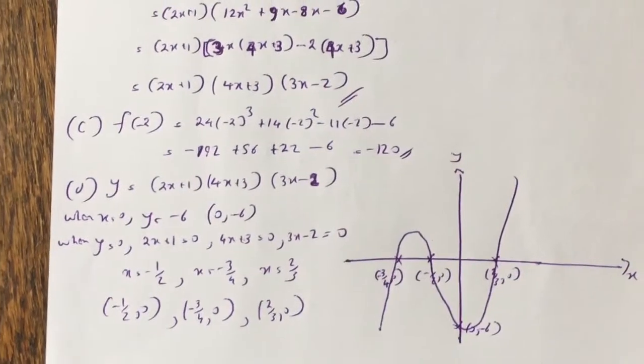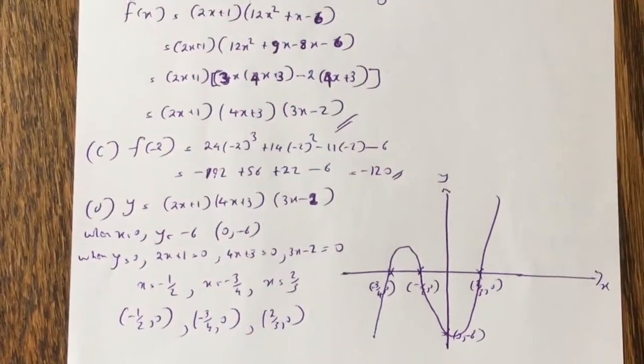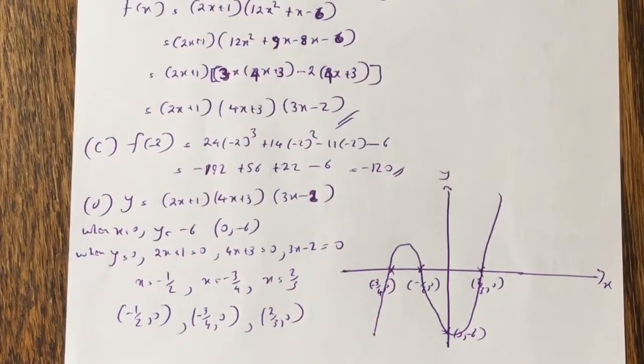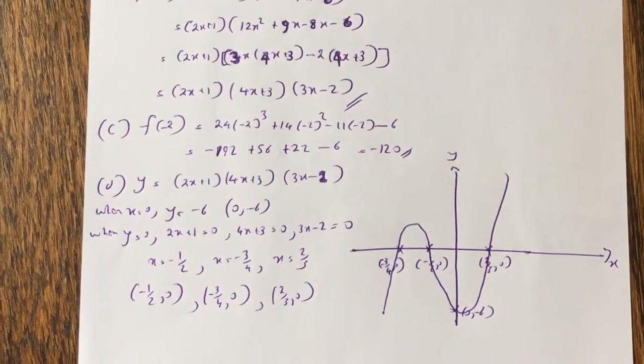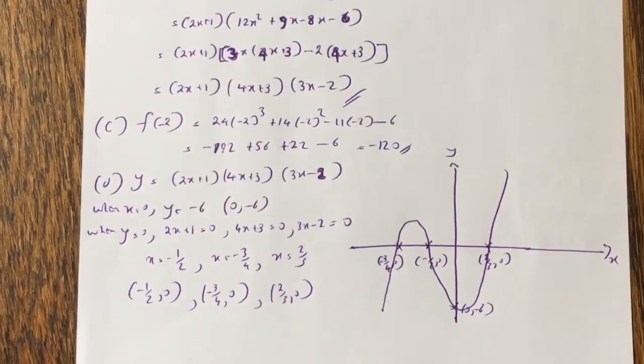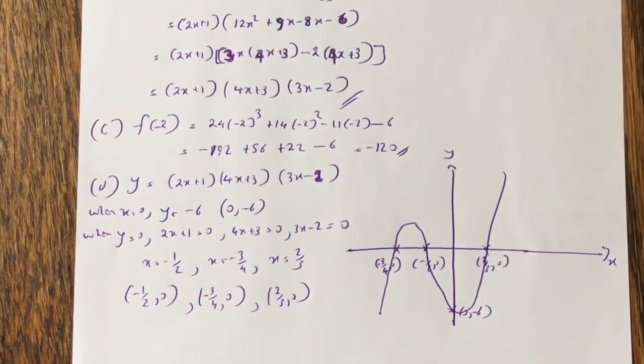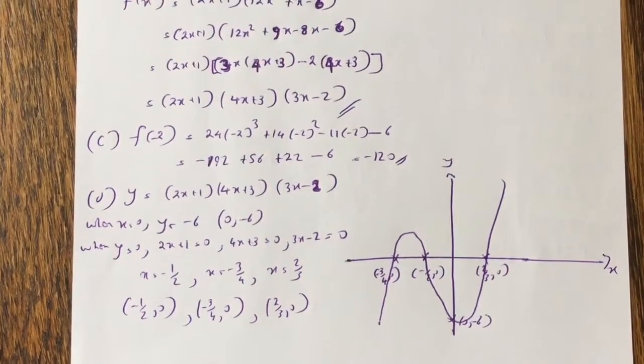And then part d, you sketch the graph as shown, so you find the y-intercept, which is 0 minus 6, and the x-intercepts are minus half 0, minus 3 quarters 0, 2 thirds 0, and you draw the cubic equation.